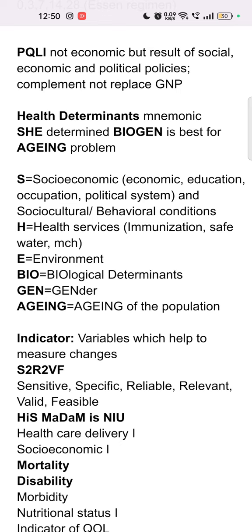From 'SHE,' we take S, then BioGen, and Aging. From S, we have socio-economic and socio-cultural conditions. Socio-cultural is also known as behavioral conditions. Under socio-economic comes economic, education, occupation, and political system — basically EOP.